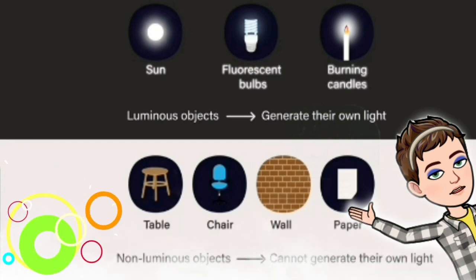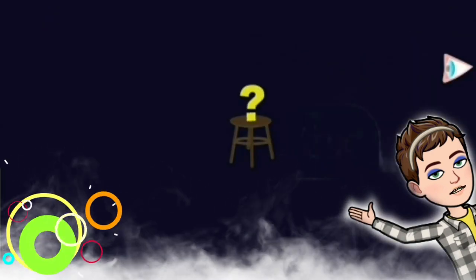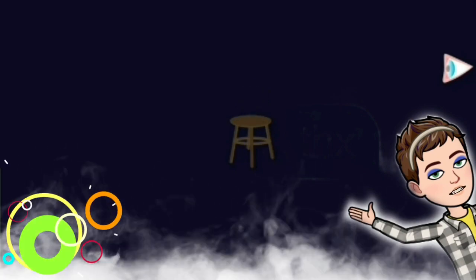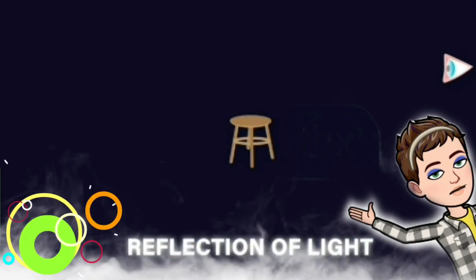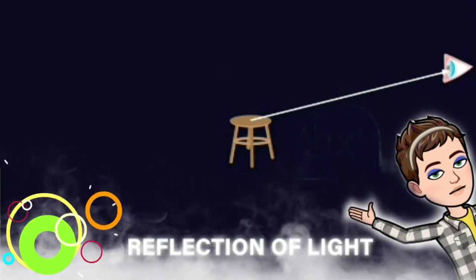But I just told you that we see objects around us because of the light coming from them. And if objects like this cannot generate light, then how come we are able to see them? We are able to see them because of the reflection of light. This object reflects the light to our eyes.